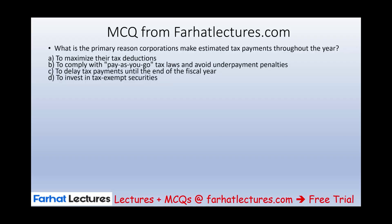Let's look at a multiple choice question from FarhatLectures.com. What is the primary reason corporations make estimated tax payments throughout the year? Options: A) To maximize their tax deduction; B) To comply with pay-as-you-go tax laws and avoid underpayment penalties; C) To delay tax payment until the end of the year; D) To invest in tax-exempt securities. The answer is B — corporations don't have an employer to withhold taxes. They are responsible for paying pay-as-you-go to avoid underpayment penalties and interest.